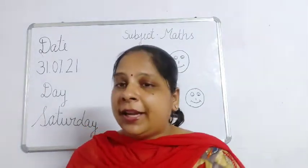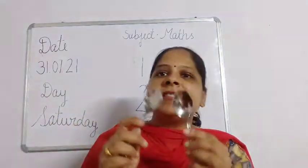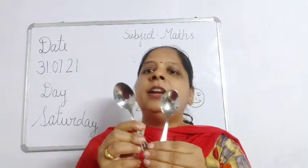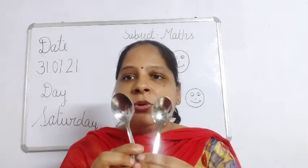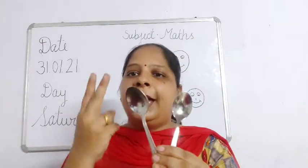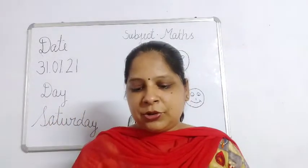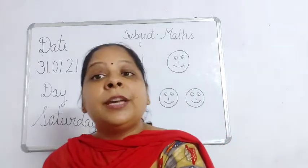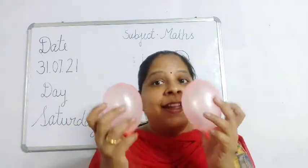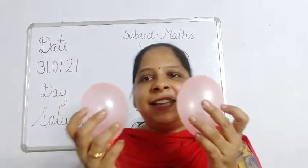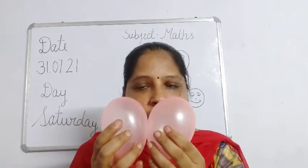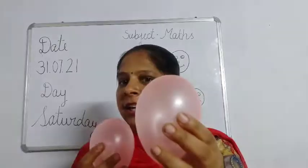After this, what do I have in my hand? I have spoons. So children, let's count these spoons. How many spoons do I have? 1, 2. I have 2 spoons. So children, after this, can you tell me what I have in my hand? 1, 2. I have balloons in my hand. So we will count the balloons. 1, 2.